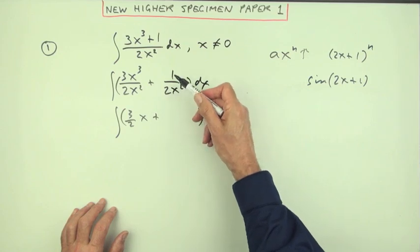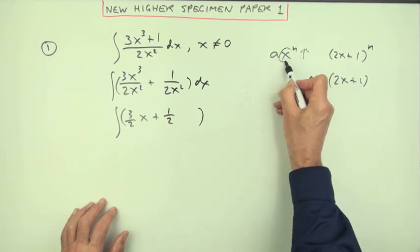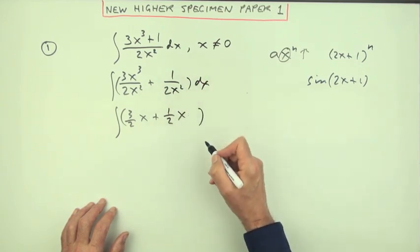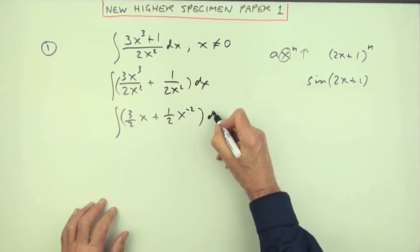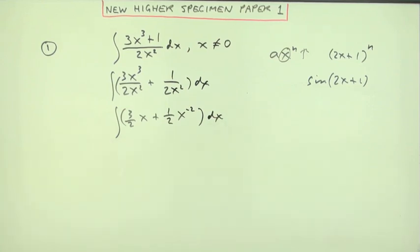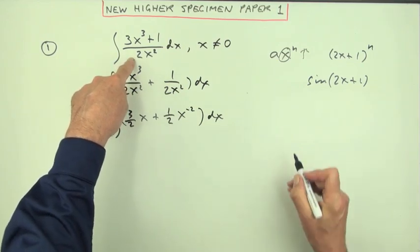You're bringing the x up—don't drag the two up with it. Leave coefficients alone. It's only the x's that get moved about. It's only the x I want on top. If it's squared underneath, it'll be to the power negative two on top. In fact, you have to get all the way to this to get your first mark.